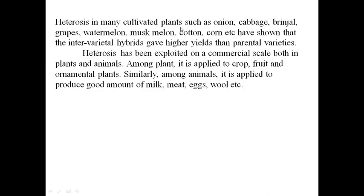Heterosis has been demonstrated in many cultivated plants such as onion, cabbage, brinjal, grapes, watermelon, muskmelon, cotton, and corn, where inter-varietal hybrids gave higher yields than the parental varieties. Heterosis has been exploited on a commercial scale in both plants and animals. Seedless watermelons and seedless grapes are examples of heterosis hybrid varieties giving higher yields. Among plants it is applied to crops, fruits, and ornamental plants, while in animals it is applied to produce better amounts of milk, meat, eggs, and wool.